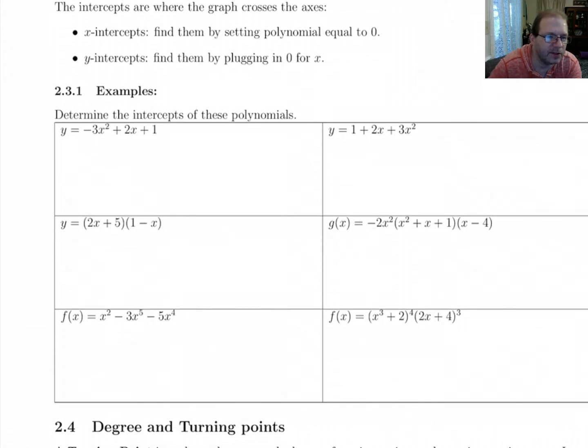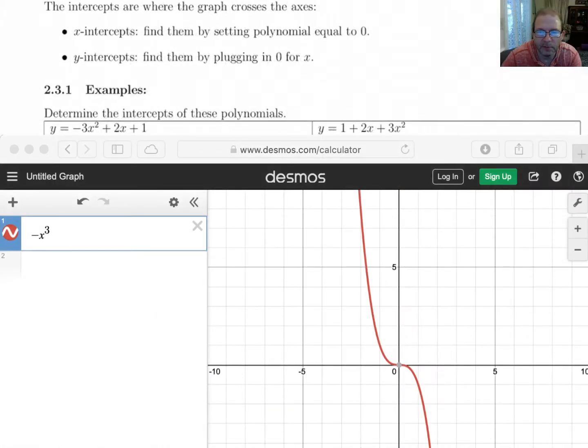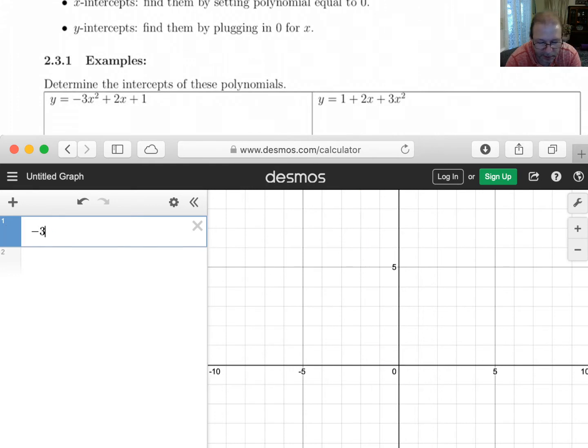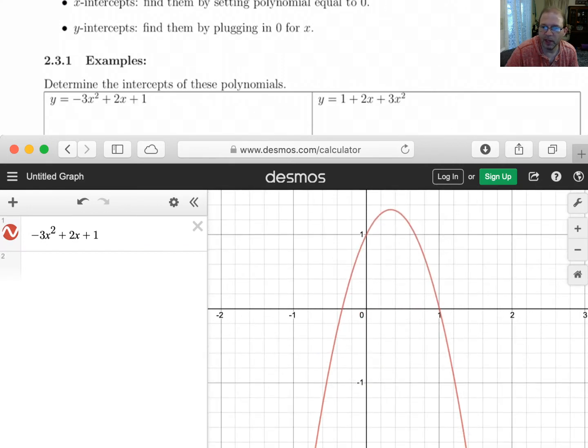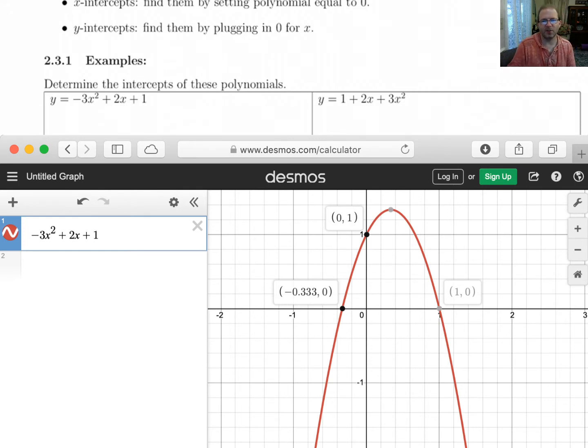This first example we have is -3x² + 2x + 1. Let's graph this one and look at it, and then we'll answer it. -3x² + 2x + 1. This one's just a parabola, so we could look at it and see here's where it crosses the y-axis. Here's where it crosses the x-axis, here and here. So we could just pull our numbers off of here, but let's actually work it out. Off of Desmos, the y-intercept would be 1, and the x-intercepts would be 1 and negative 1/3.